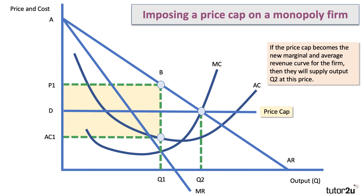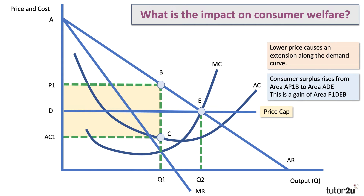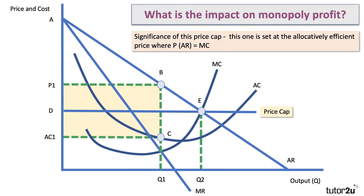If the price cap becomes the new marginal and average revenue curve for the firm — essentially they're going to try and sell as much energy as they can at that price — then they'll now supply output Q2 at price D. The lower price causes an extension along the demand curve from B to E, because lower prices encourage an extension of demand. Consumer surplus, originally the area A, P1, B, now goes up to A, D, E — there's a trapezium which is a gain in consumer surplus. Part of the significance is that this cap has been set at the allocatively efficient price, where price equals marginal cost.